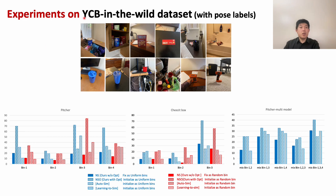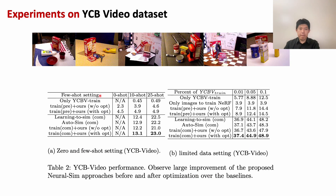On the YCB in the Wild dataset, which is a real-world dataset, our method still performs best when there are train-test domain gaps. On the larger and more complex dataset called YCB Video, where there are multiple objects in a complex scene, our method still performs best compared with the baselines.